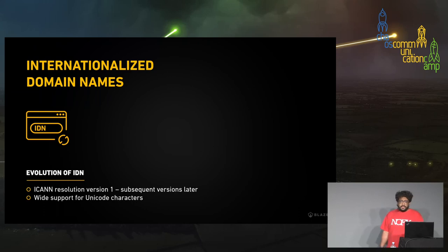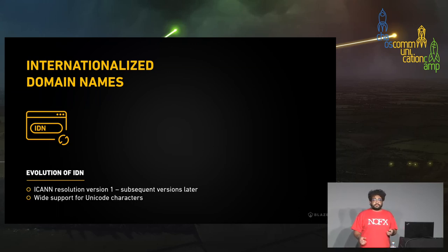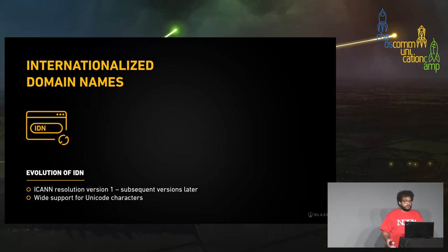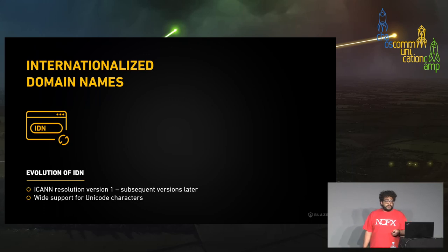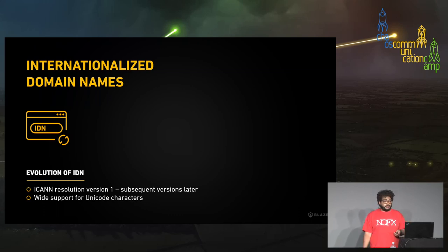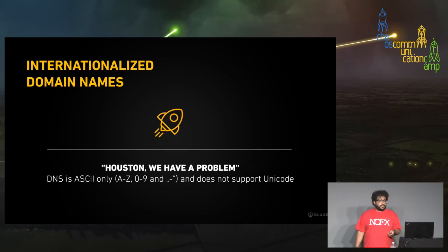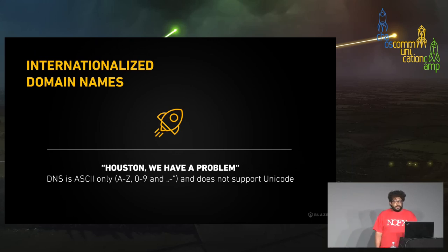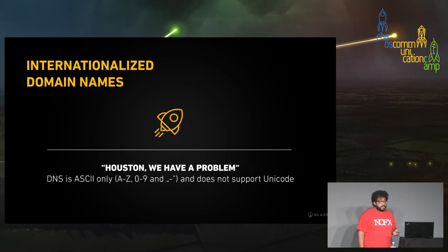Unicode support covers different languages like the Cyrillic alphabet used in Russian, and some really old ancient European languages. But there is a technical problem when implementing IDNs: DNS, one of the building blocks of the internet, is only ASCII — it doesn't speak Unicode. Because of that, they came up with a different way to bridge the gap.